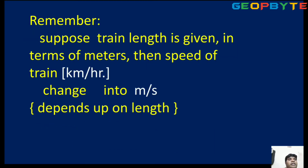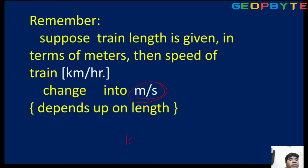Remember: if the train length is given in meters and the speed is in kilometers per hour, compulsorily convert speed into meters per second. As mentioned in the first video on time and distance, convert speed into meters per second because speed is in kilometers per hour but distance is in meters — both are different measurements, so convert kilometers per hour into meters per second.